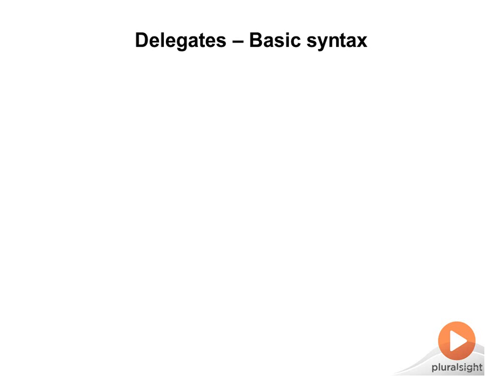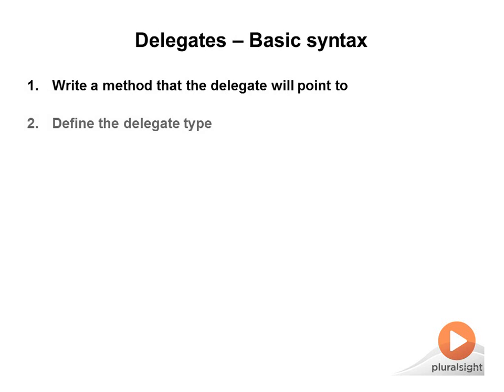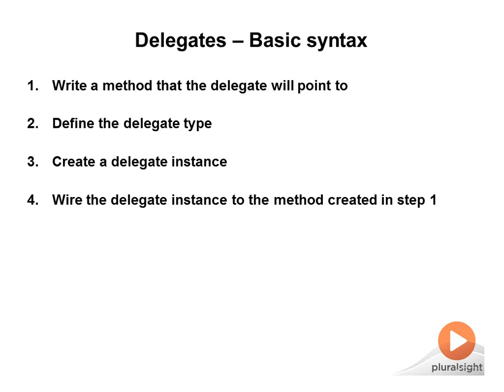There are five steps to creating and using a delegate in .NET. Step one: write the method that the delegate will point to. Step two: define the delegate type. Step three: create a delegate instance of the delegate type. Step four: wire up the delegate instance with the method created in step one. And step five: invoke the method using the delegate.